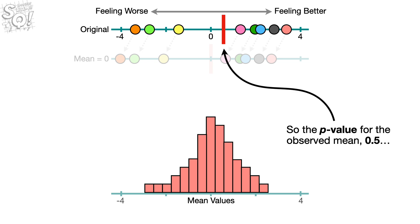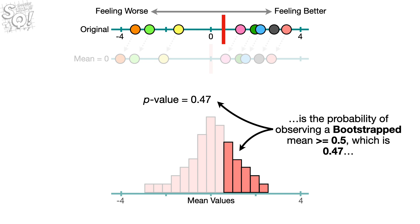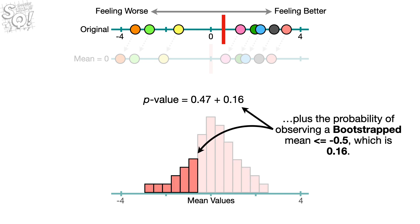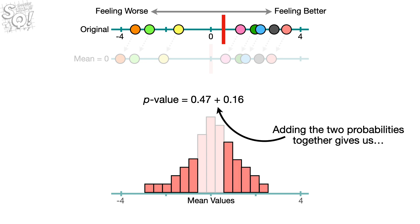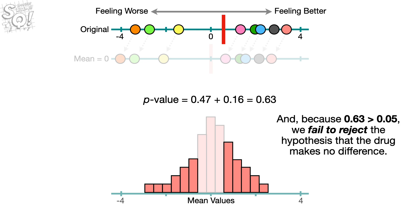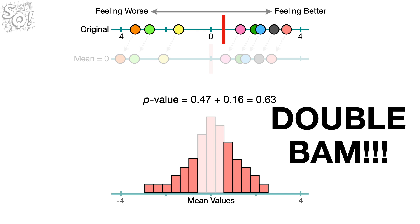So, the p-value for the observed mean, 0.5, is the probability of observing a bootstrapped mean greater than or equal to 0.5, which is 0.47, plus the probability of observing a bootstrap mean less than or equal to negative 0.5, which is 0.16. Adding the two probabilities together gives us 0.63. And, because 0.63 is greater than 0.05, we fail to reject the hypothesis that the drug makes no difference. Double bam!